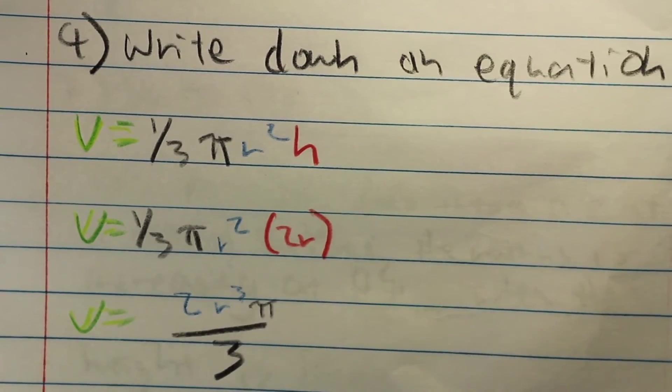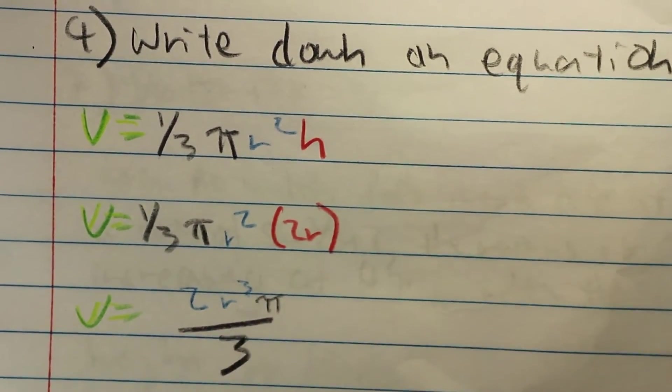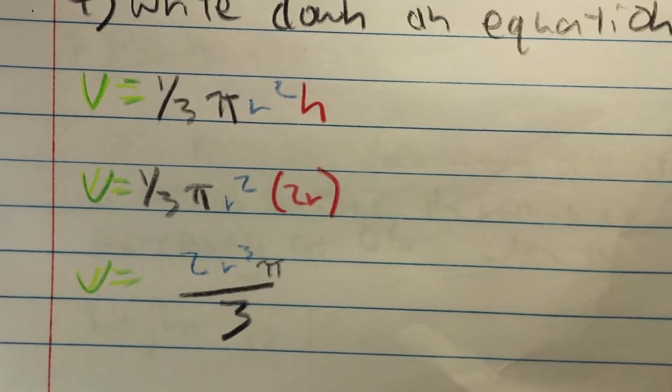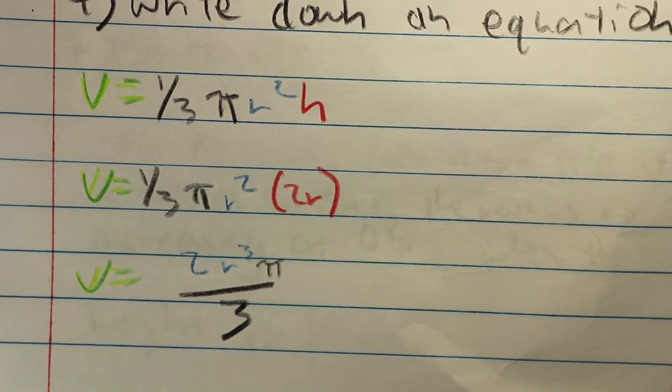What we did here was take the h and solve it for r, just so we have a single variable. And the single variable version of the volume formula for a cone is 2r³ π over 3.